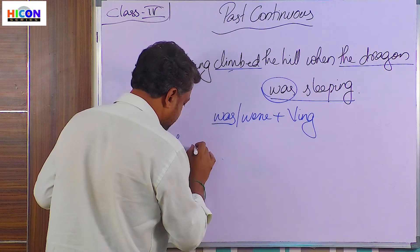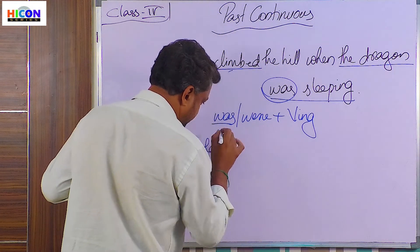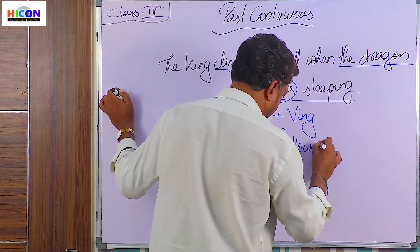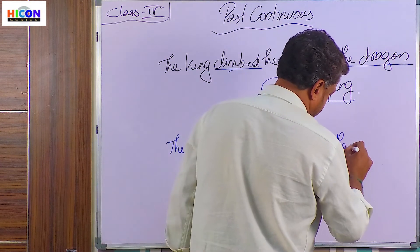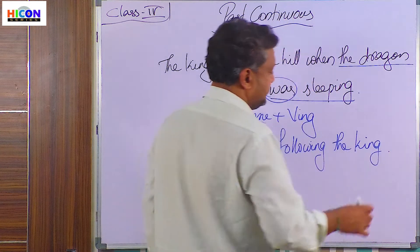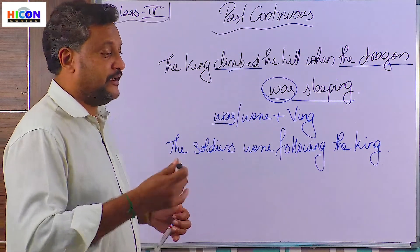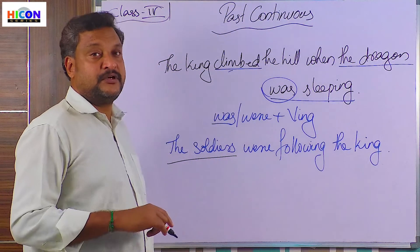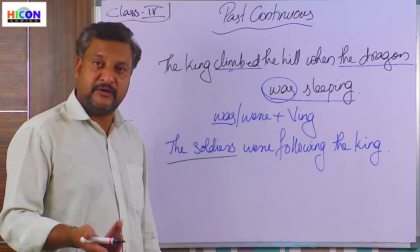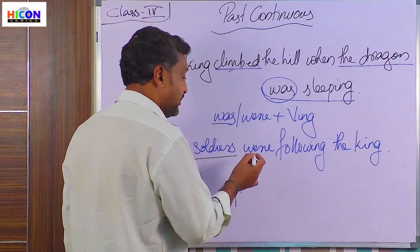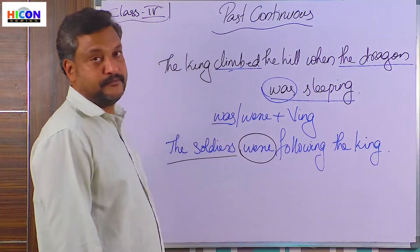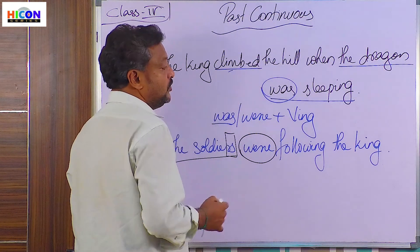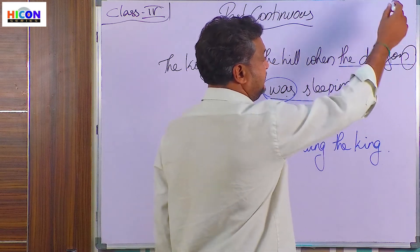For example: 'The soldiers were following the king.' Soldiers — how many are there? More than one person, so it is plural. That is why we used 'were' here. So 'were' is used when the subject is plural, and 'was' is used when the subject is singular.